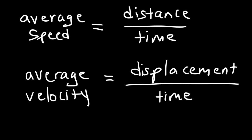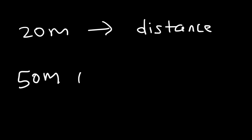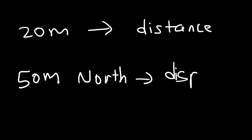Displacement is distance with direction. If a car travels 20 meters, that is the distance the car traveled. But if a truck traveled 50 meters north, we have distance with direction — that describes the displacement of the vehicle.